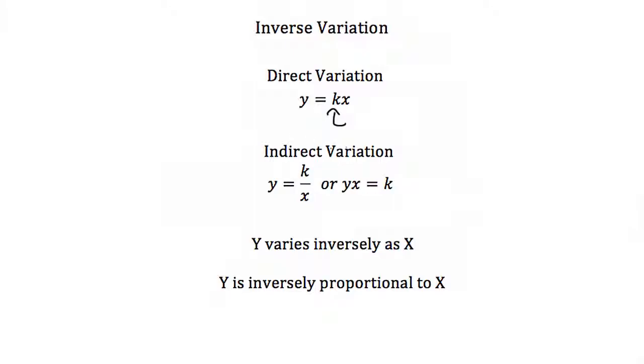An indirect variation equation is when y equals k divided by x, or when we have x in the denominator.